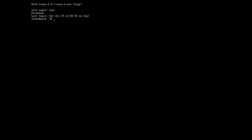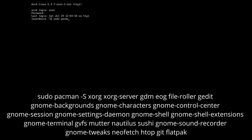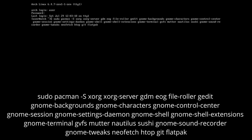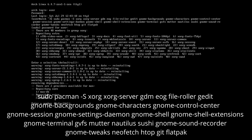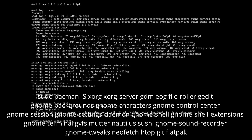The packages in that command include: NVIDIA video card drivers, NetworkManager applet as an add-on for NetworkManager, Pipewire and PavuControl as sound drivers, and font packages including TTF Liberation. Write sudo reboot. It's time to install the GNOME environment and the Xorg windowing system. Write the command: sudo pacman -S xorg xorg-server gdm eog file-roller gedit gnome-backgrounds gnome-characters gnome-control-center gnome-session gnome-settings-daemon gnome-shell gnome-shell-extensions gnome-terminal gvfs mutter nautilus sushi gnome-sound-recorder gnome-tweaks neofetch htop git flatpak.